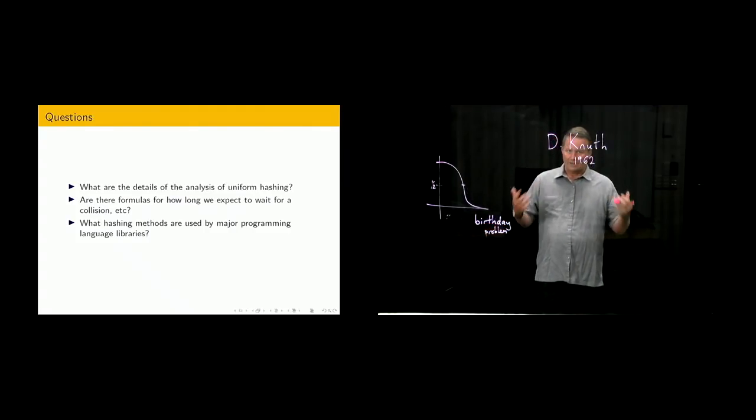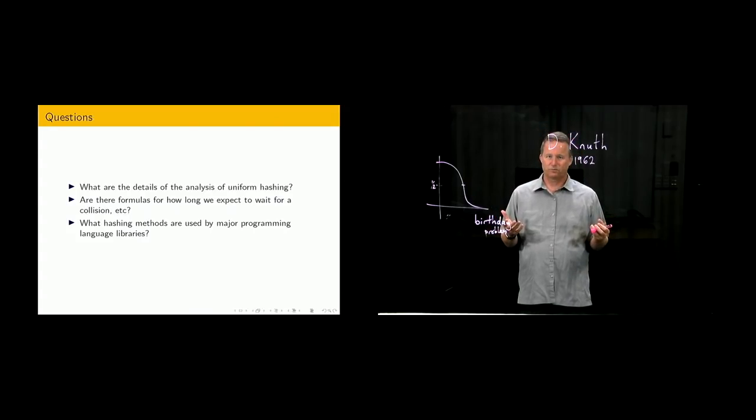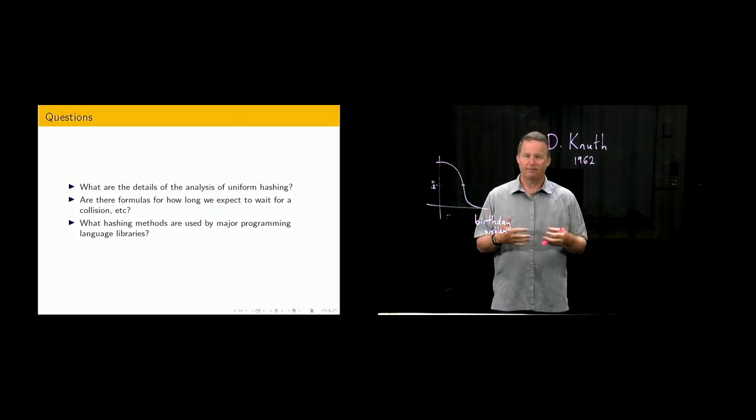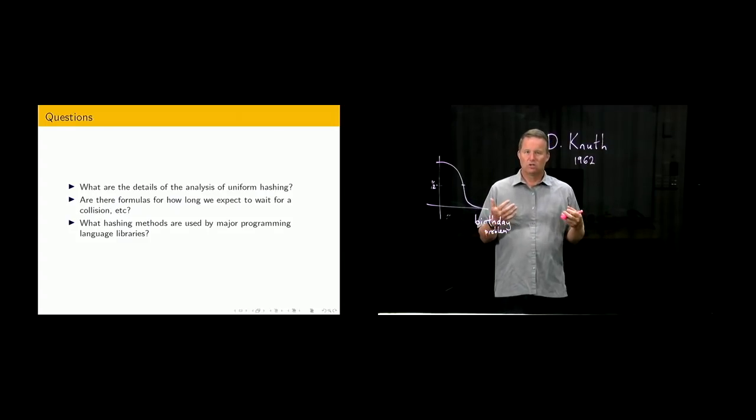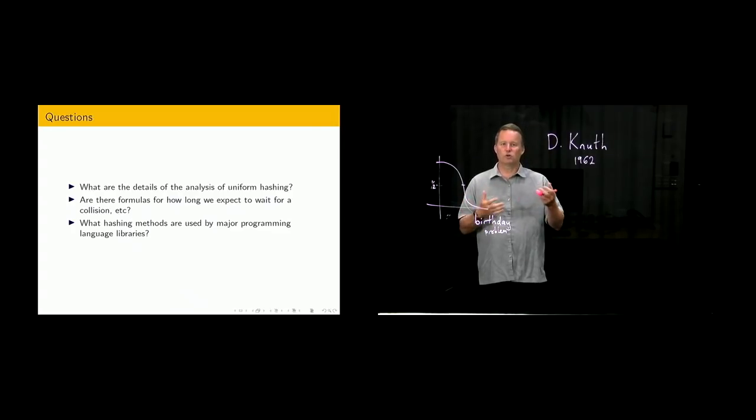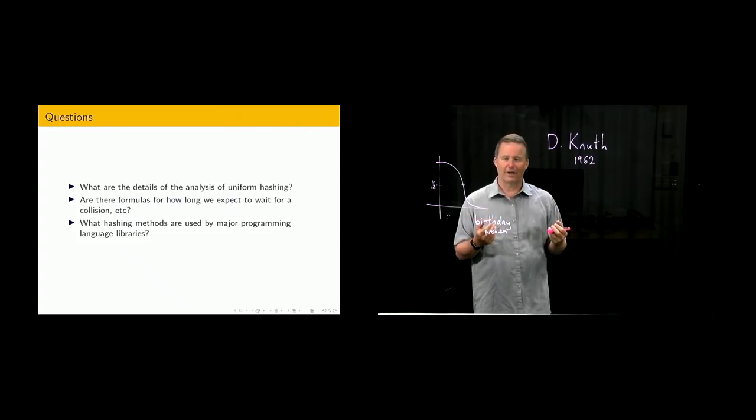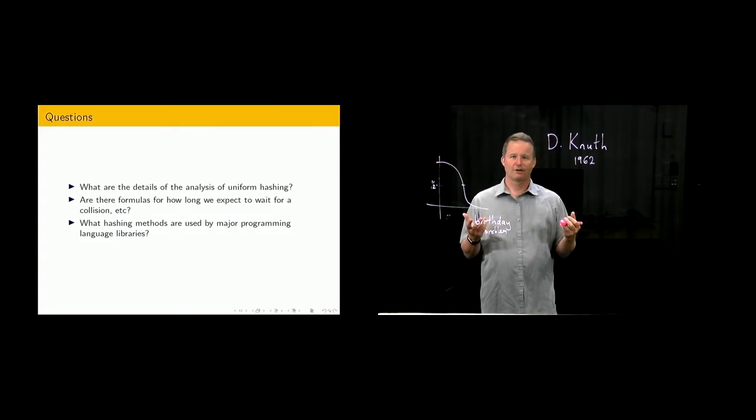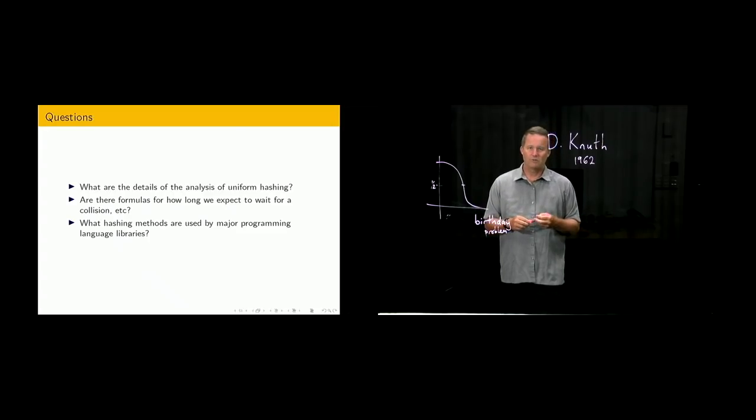Finally, hashing is extremely important in practice. It's used by every major library and every major language to help implement the table or dictionary abstract data type. But we've seen various types of hashing. Lots of choices could be made. Open addressing versus chaining, etc. So, what choices have been made by developers? That's something for you to look up. A bit of internet research. Find out your favourite language and find out how hashing is actually implemented at the moment. So, think about those. We'll see you next time.